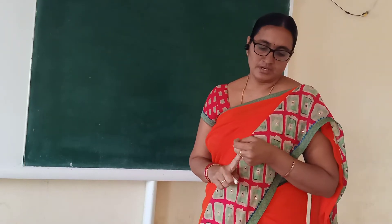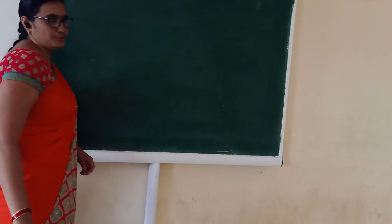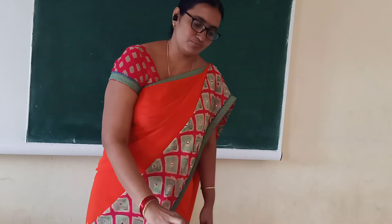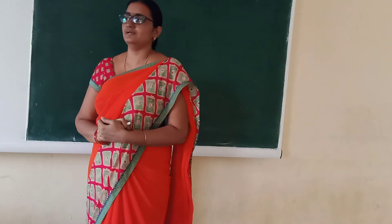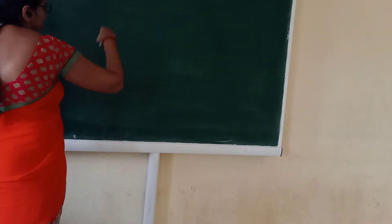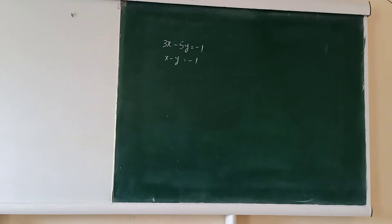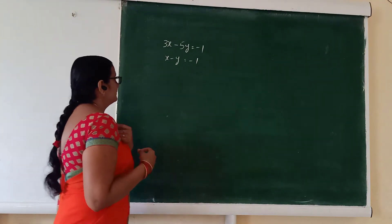We already covered the elimination method, now we move to the substitution method. Let's do this substitution method. The first problem: 3x minus 5y is equal to minus 1, and x minus y is equal to minus 1. Here we will see the substitution method to find x and y values.